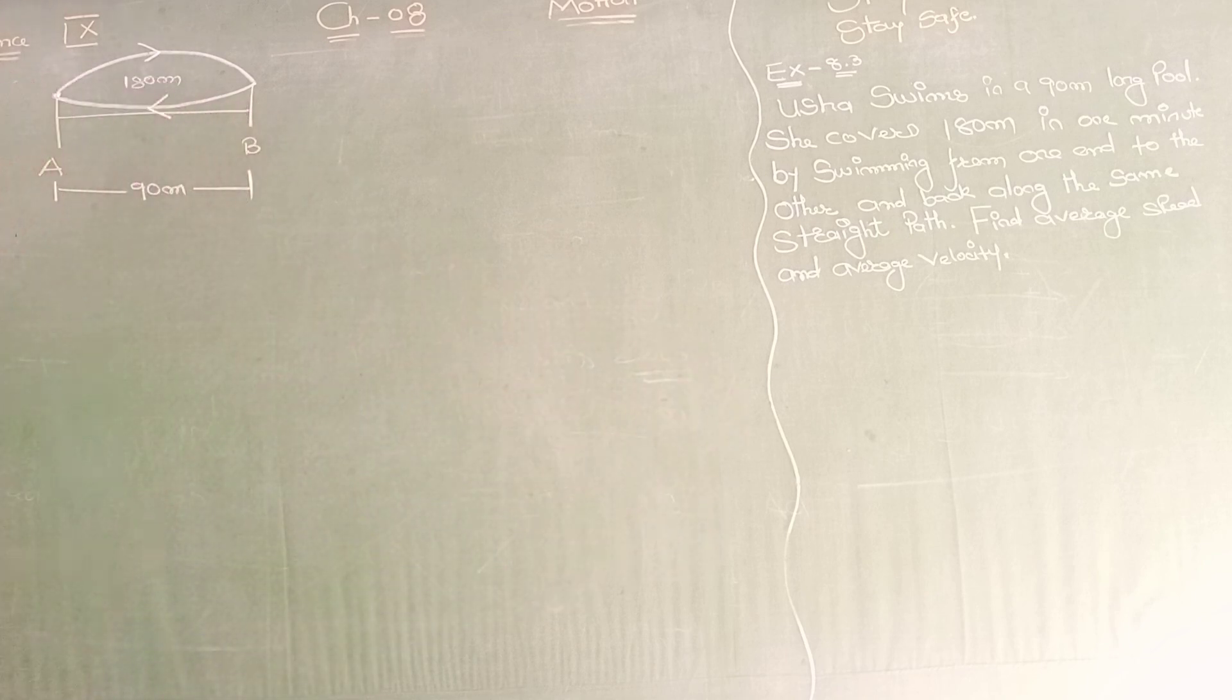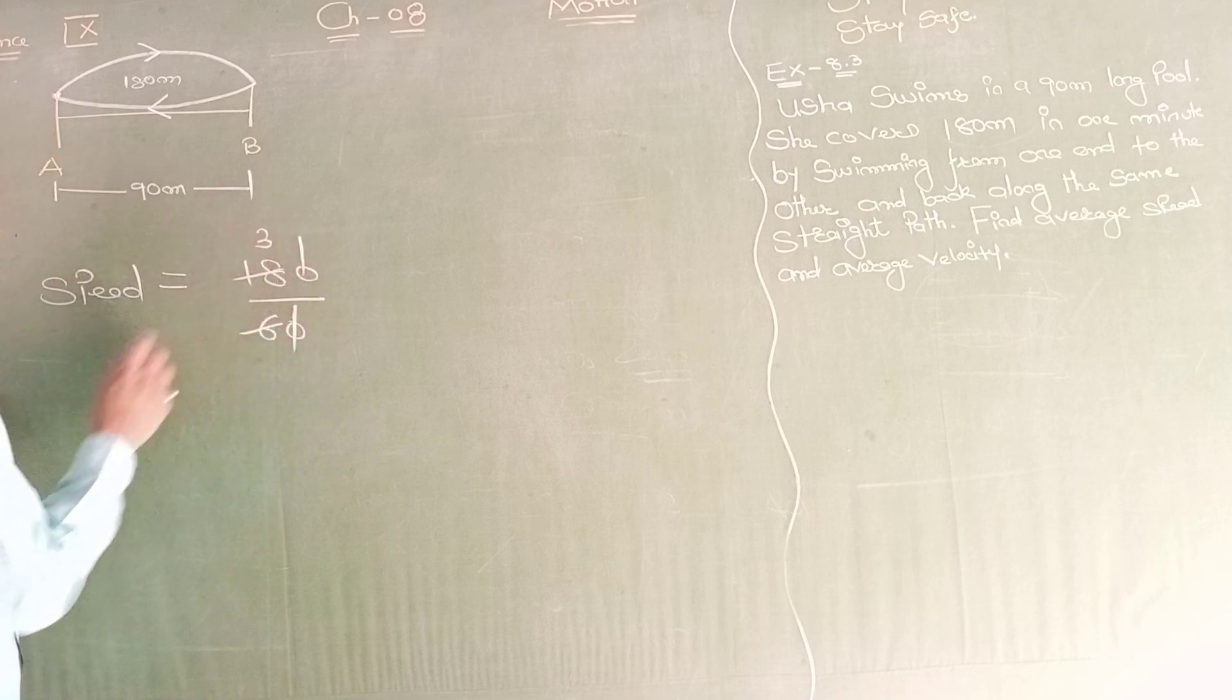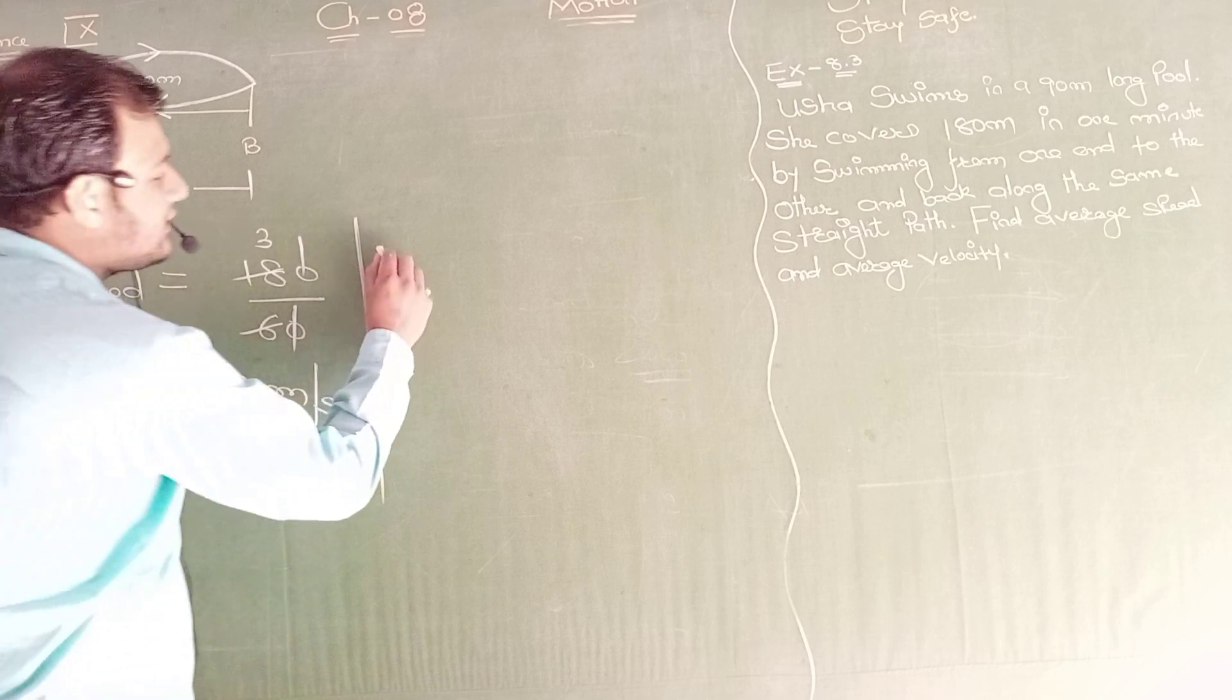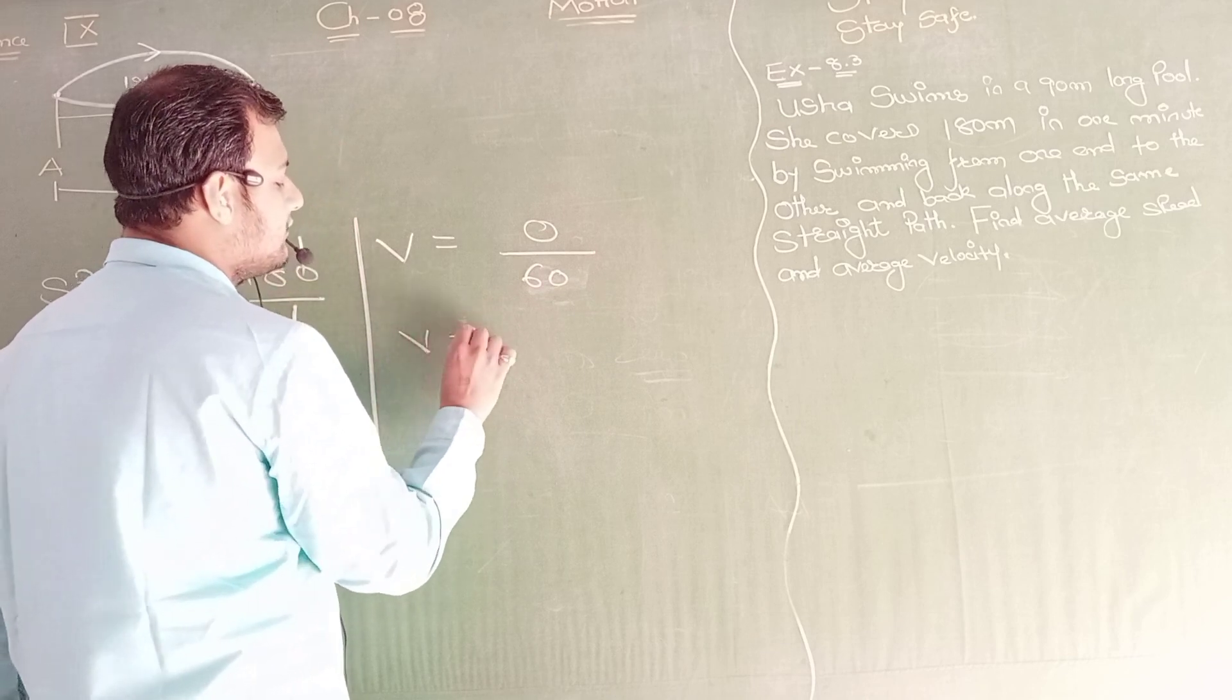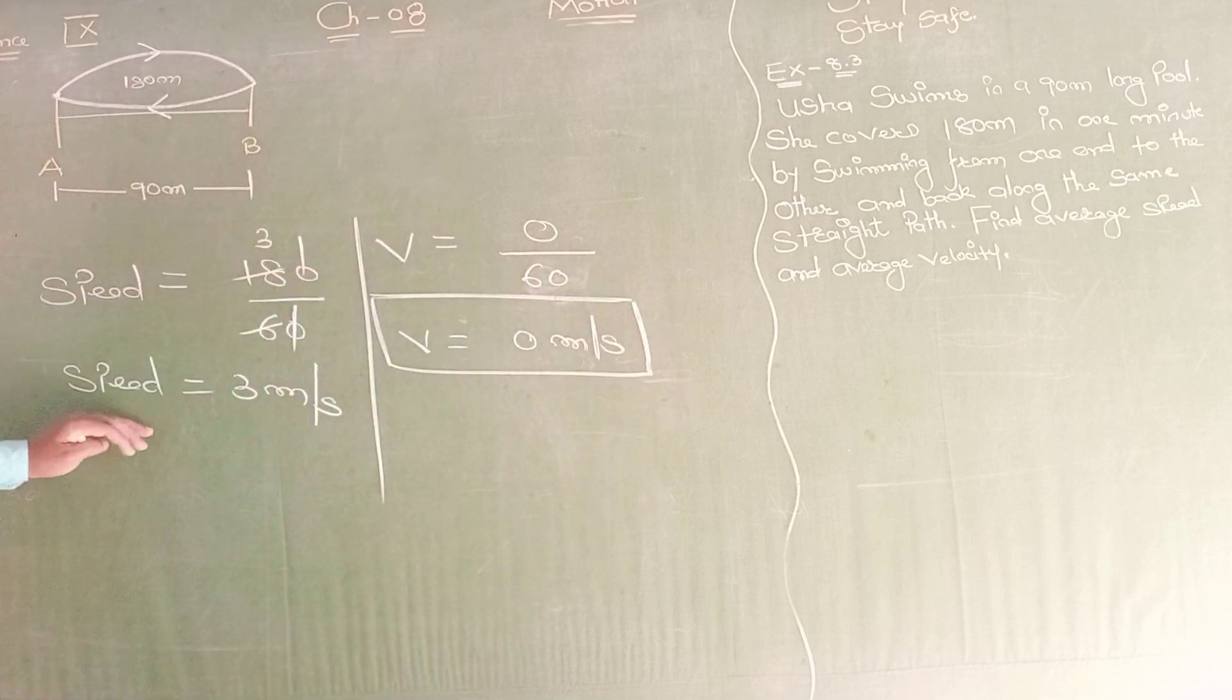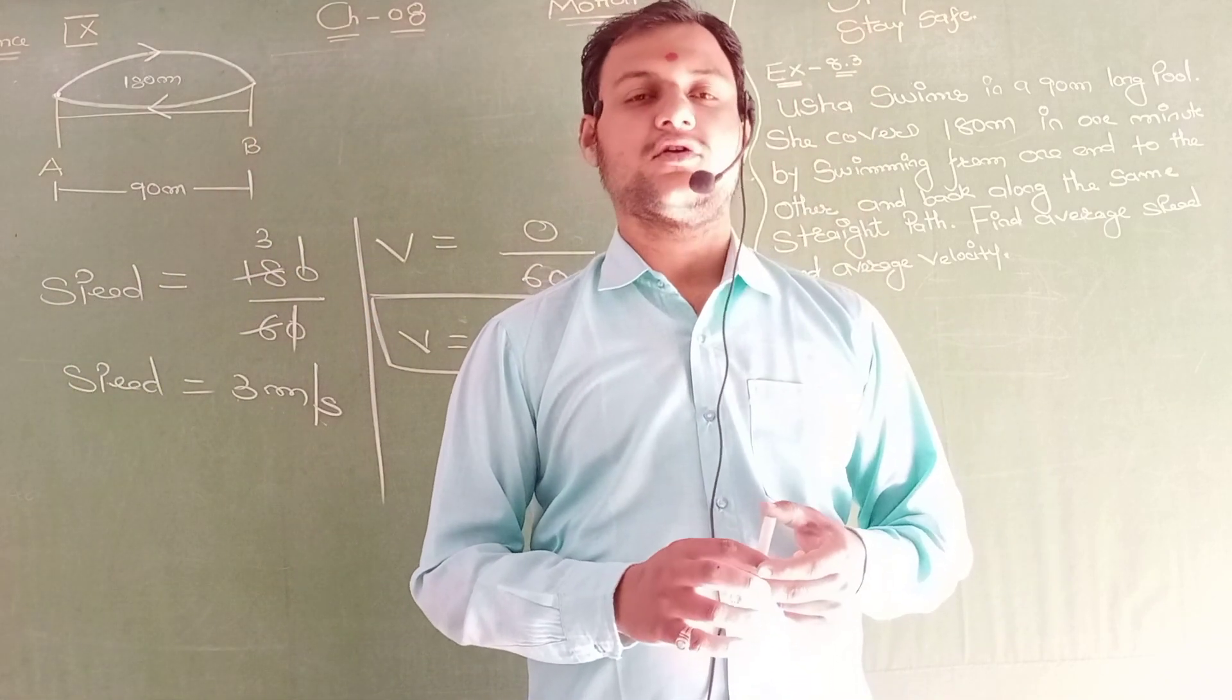We have to find average speed and average velocity. Total distance is 180, total displacement is zero, total time is 60. Let's substitute values. Speed equals 180 divided by 60, which is 3 meters per second. For velocity, we write v. That is total displacement, which was zero, divided by total time, which was 60. v equals zero meter per second. So her velocity is zero, but her speed is 3 meter per second.